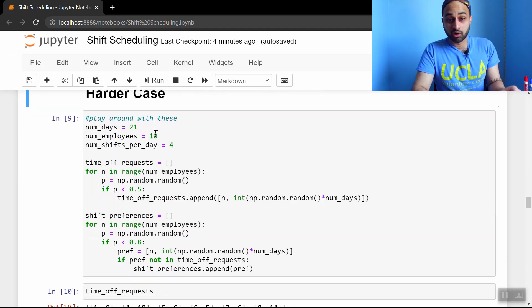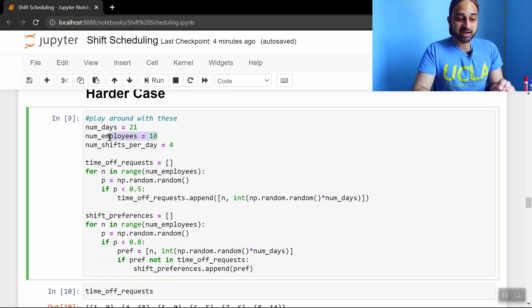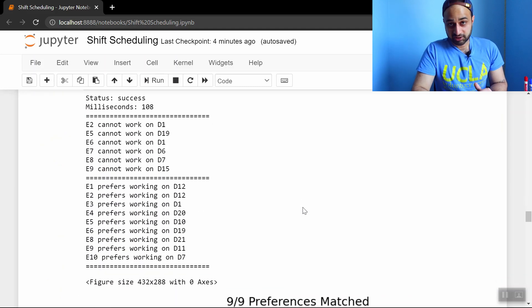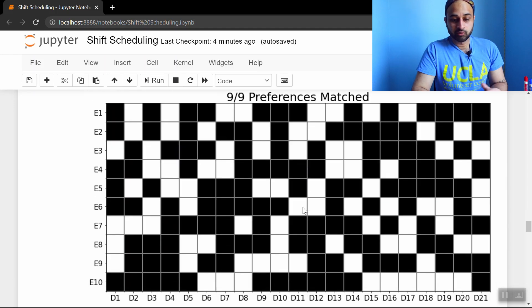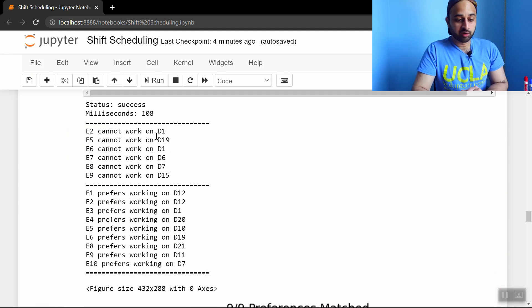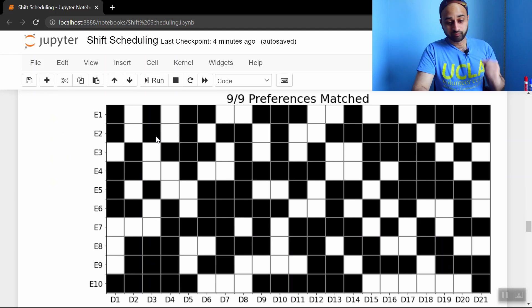So we're going to do a harder case. Now there's 21 days to schedule, 10 employees, and four shifts per day. And these next two for loops are basically just simulating some days off and some preferences randomly. So we see there's quite a few of these time off requests to respect, and there's quite a few shift preferences to work through. But we see that within 108 milliseconds, this is way less than a second still, we get this full schedule. Boom. And by the way, it shows you how many of the preferences were matched. In the previous one, we got all the preferences, all five out of five. Here we got the same exact thing, nine out of nine preferences matched. Two for two. In the schedule, you can check that it's the same, but it's amazing that we're able to get this within less than a second.